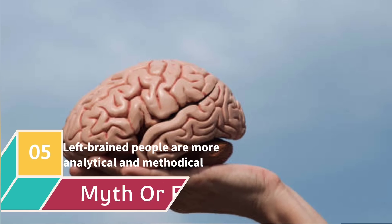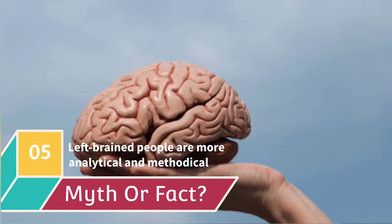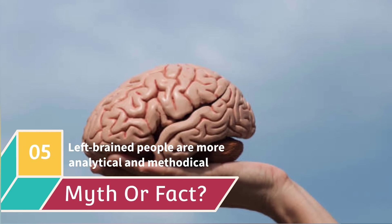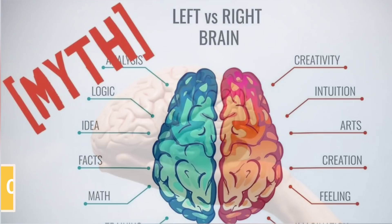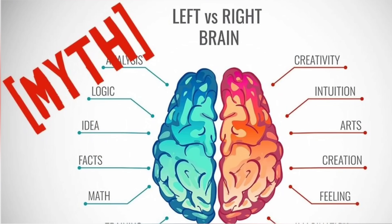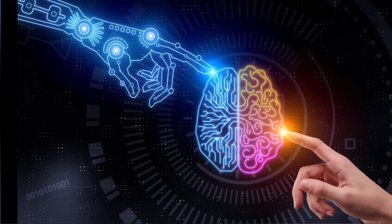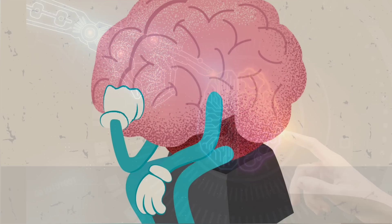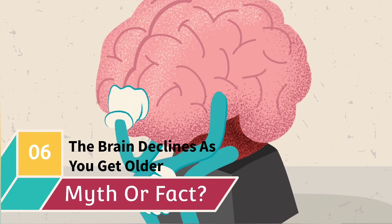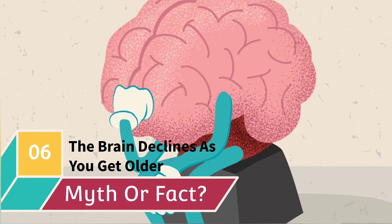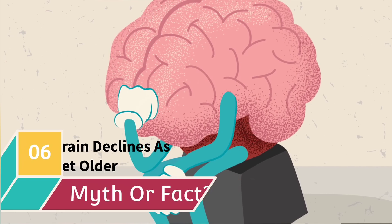Myth number five: left brain people are more analytical and methodical while right brain people are creative or artistic. The truth is scientists at the University of Utah have debunked the myth that people predominantly use one side of their brain more than the other.